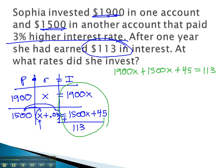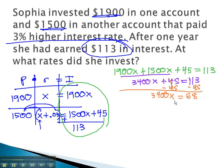We can start solving by combining like terms to get 3,400x plus 45 equals 113. Subtracting 45 from both sides, we get 3,400x equals 68. Finally, dividing by 3,400 tells us that x is equal to .02.